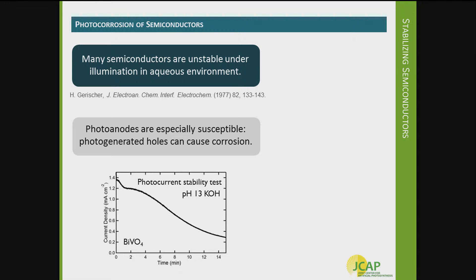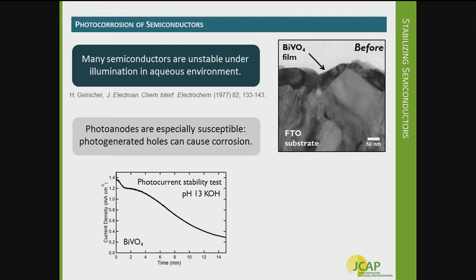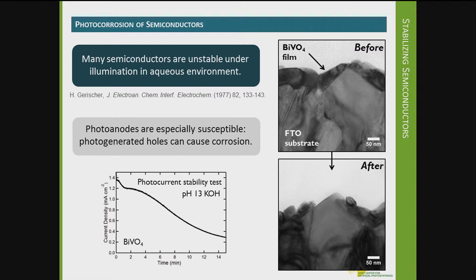This plot here is an example of what a photo corrosion process looks like in a certain material. This is bismuth vanadate, a commonly studied semiconductor oxide. You can see that the photocurrent over about 15 minutes decays pretty dramatically. Looking at a TEM image of a bismuth vanadate film on an FTO substrate, before the test you have a very thin conformal film, but after an hour of testing in pH 13 conditions the film is partially dissolved. This dissolution process is in contrast to other materials which actually passivate when they photo corrode.